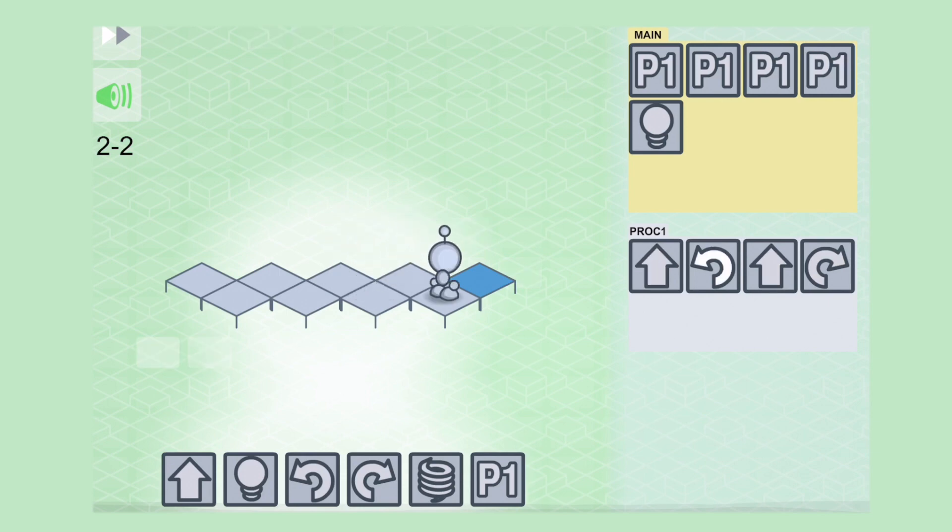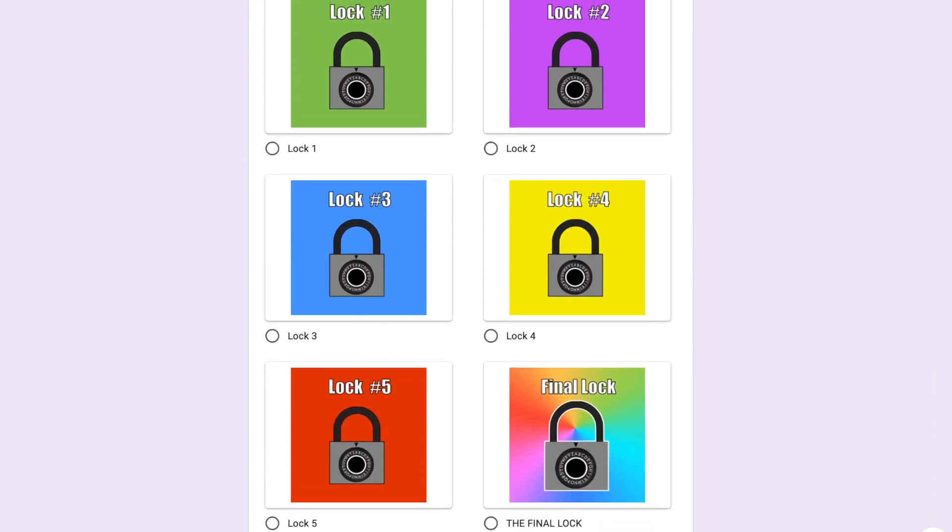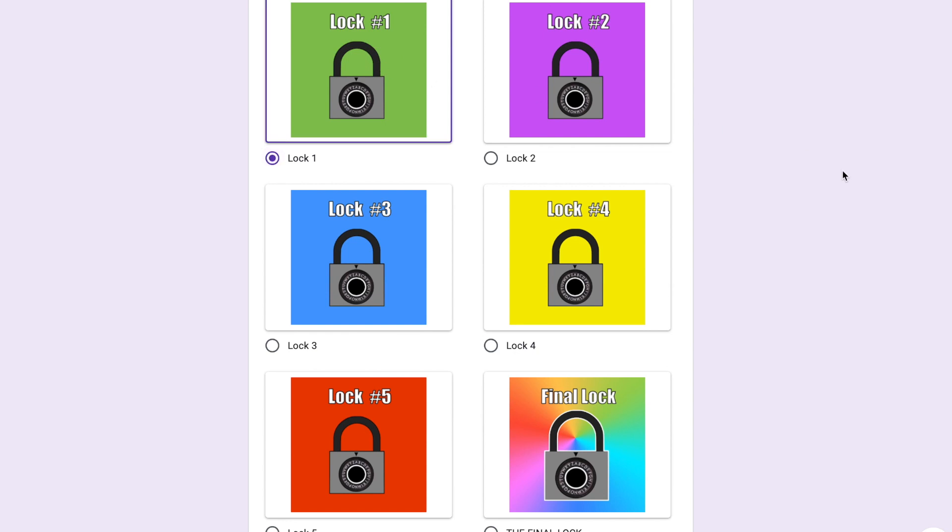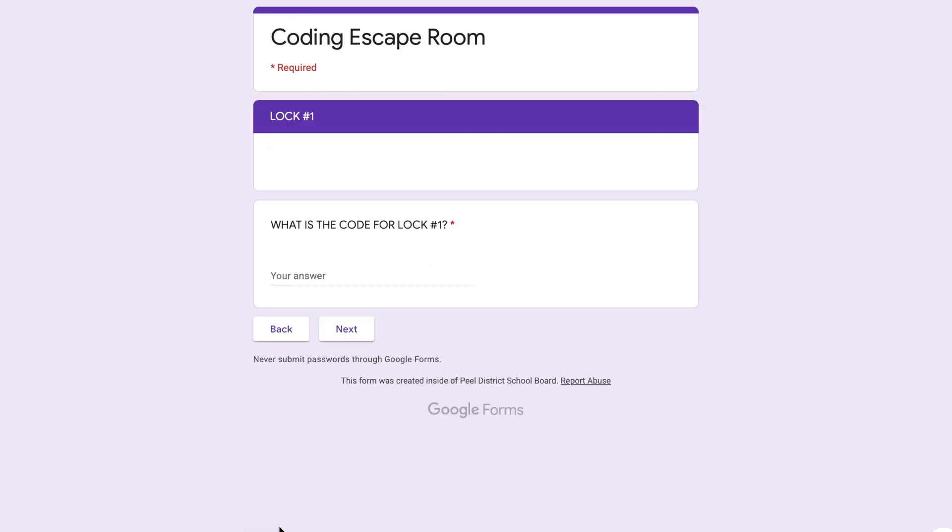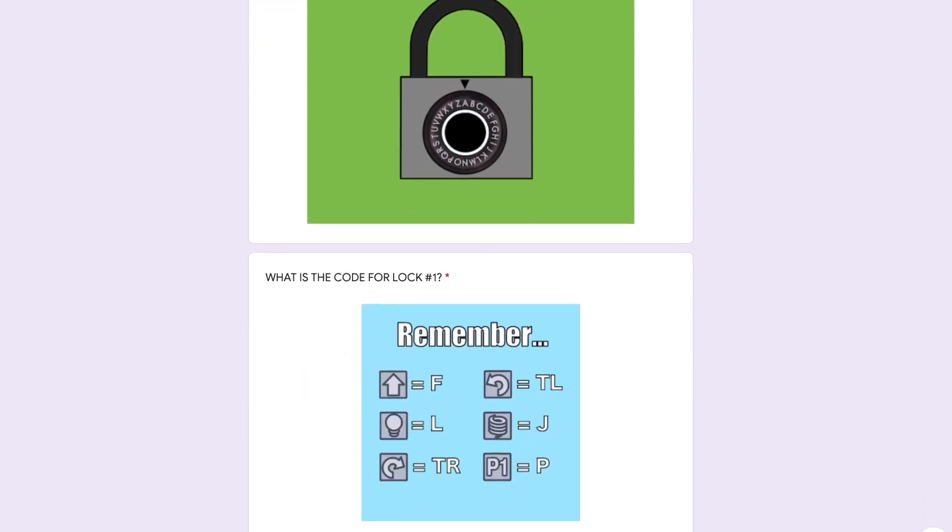Now that we have done our Lightbot tutorial let me explain how the coding escape room will work. By clicking on the link in the comment section below you will be taken to a Google form with multiple locks that looks like this. In order to figure out the code for each lock you need to watch my clue videos and figure out what the mystery commands are. Watch Lightbot carefully to see what it is doing at each step.